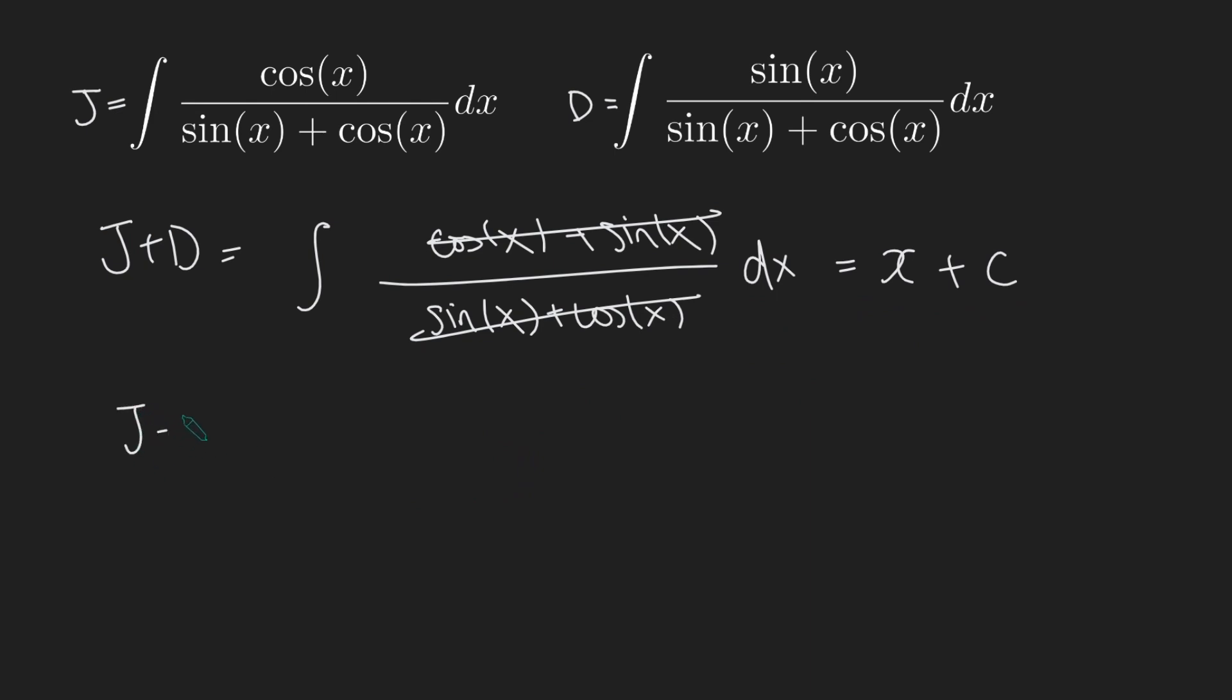What about J minus D? What's that? So now we're subtracting our douchebag from Jesse Pinkman. So this is now going to be the integral of this guy minus this guy. Bring them into the same integral. We've got cosx minus sinx all over sinx plus cosx. And now, annoyingly, there's no simple nice cancellation like we had a moment ago. But if we stare at this for a second, we may notice that if I look at sinx here on the bottom, the derivative of that is precisely cosx. So that sinx differentiates to cosx. And cosx differentiates to minus sinx. And so therefore, the numerator is the exact derivative of the denominator.